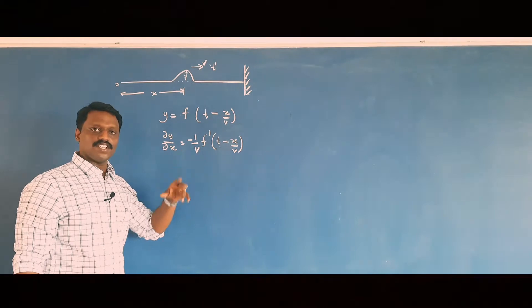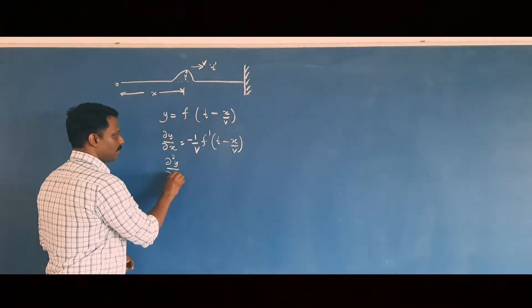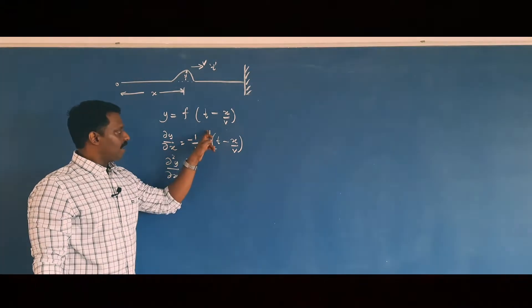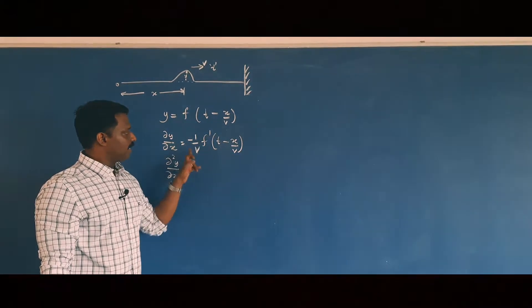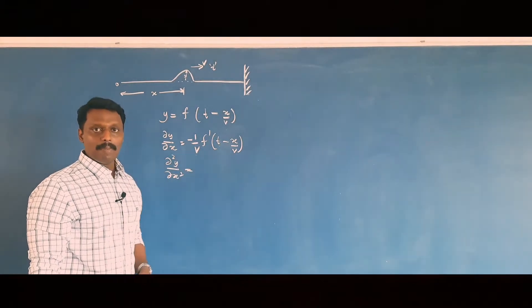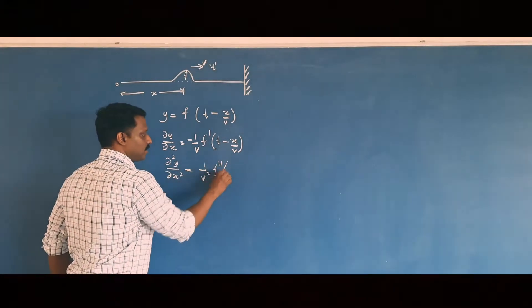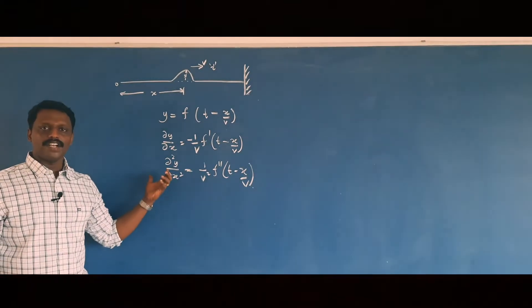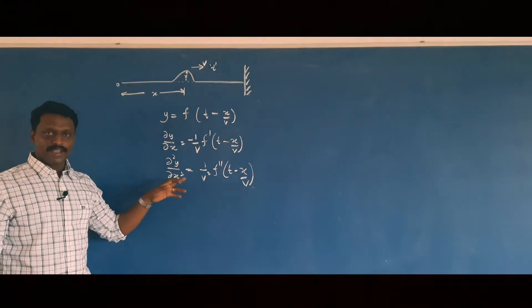Differentiating once again with respect to x partially: ∂²y/∂x² = f″(t − x/v) × (−1/v) × (−1/v) = (1/v²) f″(t − x/v). So we have partially differentiated the equation with respect to x twice.